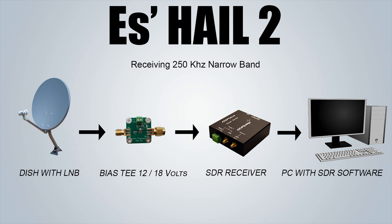The only thing required would be a BiasT of around 12V to power the LNB and to set it into horizontal polarisation. You would need around 18V for vertical polarisation if you were going to be receiving the digital video from the 8 MHz portion.